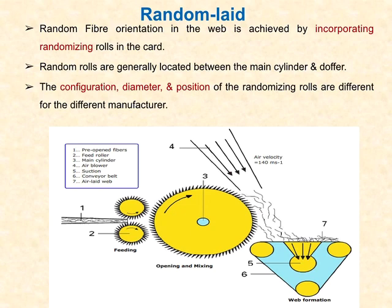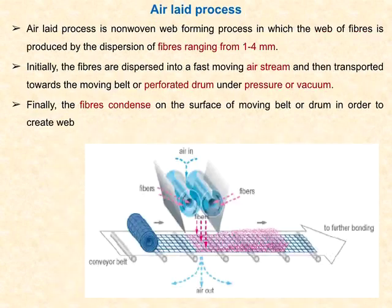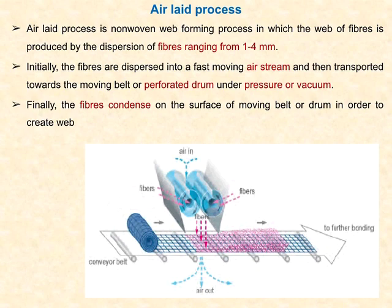In the air lay process, there is a conveyor belt with two perforated drums and air blowing upward. When the fiber is opened, it is deposited through the air onto the surface and then transferred to the bonding section. Air lay is a non-woven forming process in which the web of fibers is produced by dispersion of fibers ranging from 1 to 4 mm. Fibers are dispersed into a fast-moving air stream and then transferred toward a moving belt or perforated drum under vacuum pressure.